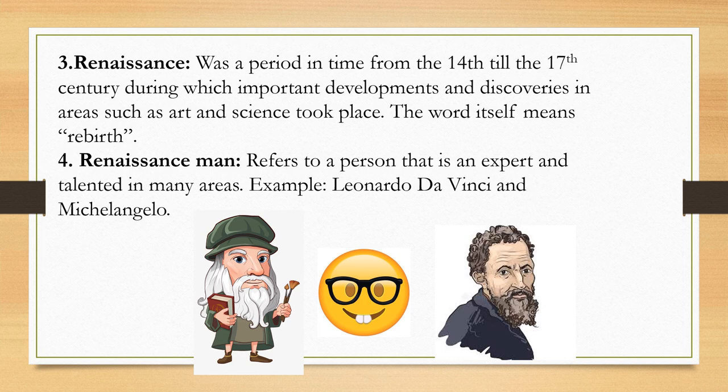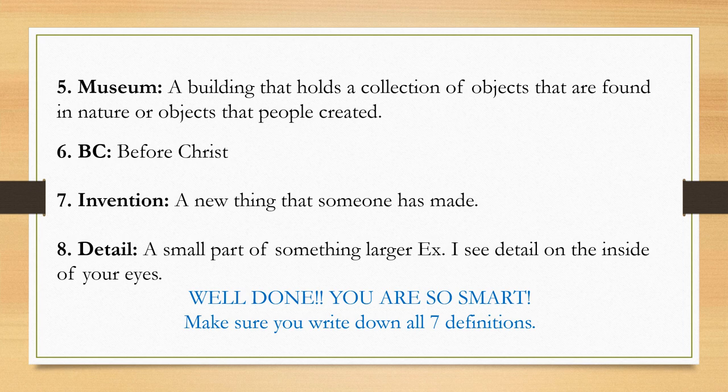For example, Leonardo da Vinci and Michelangelo. Number 5: Museum — a building that holds a collection of objects that are found in nature or objects that people created. Have you been to a museum before? Number 6: BC — it means Before Christ. Number 7: Invention — a new thing that someone has made.